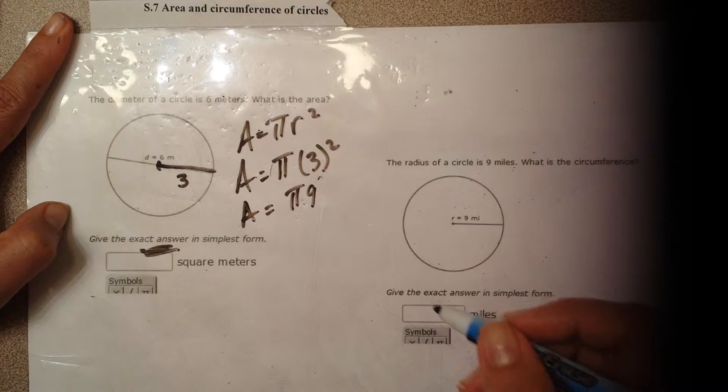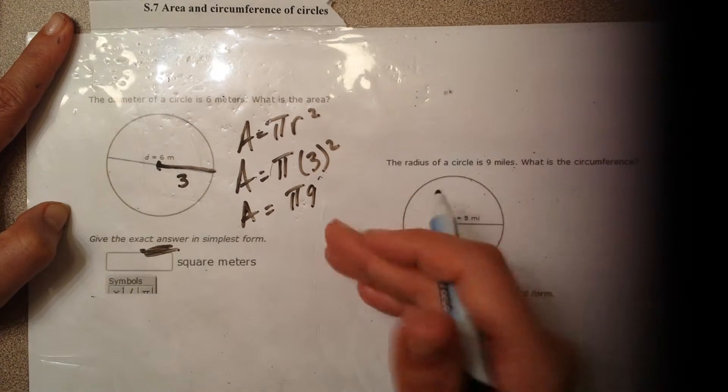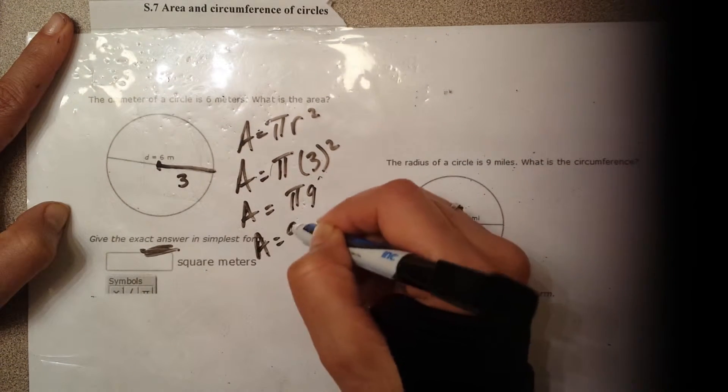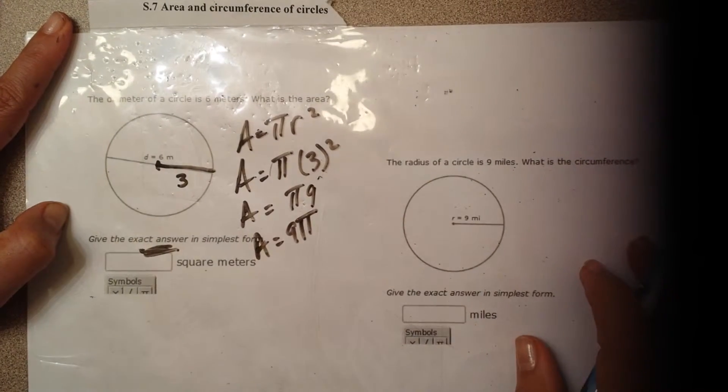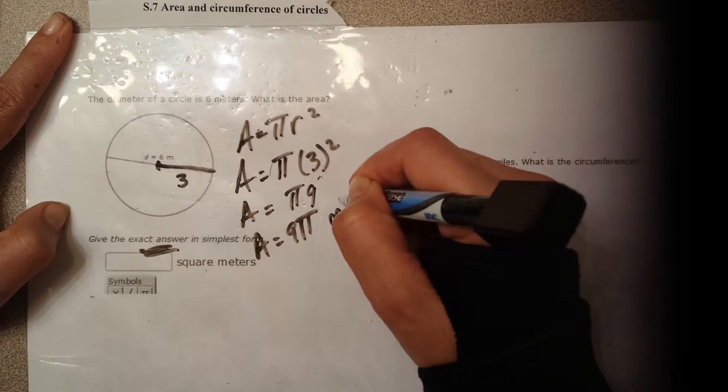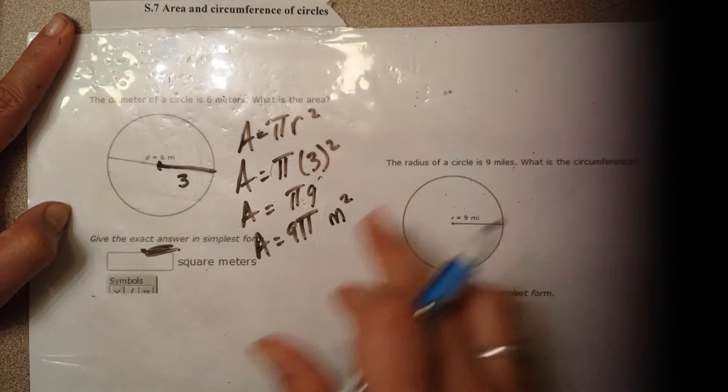Now, just to be politically correct, just the same way you say 2x, you never say x2. You're going to say your answer is 9 pi. Okay, the units are in meters, and because it's area, it's always going to be squared, so meters squared.